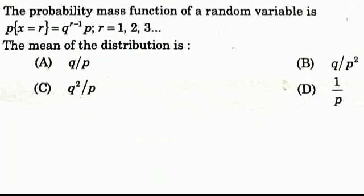Question 3: The probability mass function of a random variable is P(x = r) = q^{r−1} · p, for r = 1, 2, 3, etc. The mean of the distribution — Options: A: q/p, B: q/p², C: q²/p, D: 1/p. Answer: 1/p.